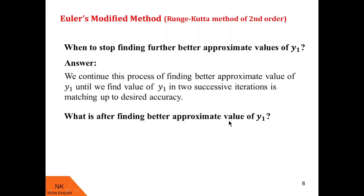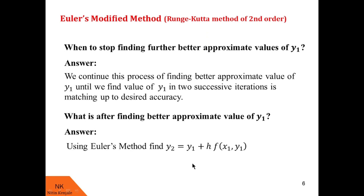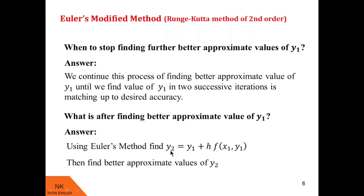After finding the better approximate value of y1 and stopping the iteration process, if necessary, we proceed to find y2 at x2 using Euler's method: y2 = y1 + h·f(x1, y1). Once we obtain y2, we again apply Euler's modified method to find better approximate values of y2 using the same formulas.